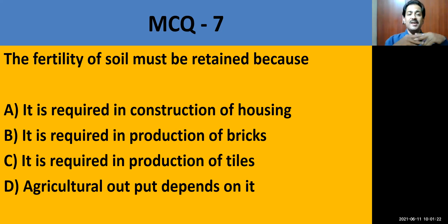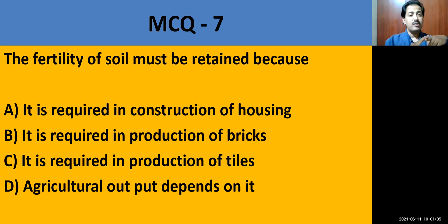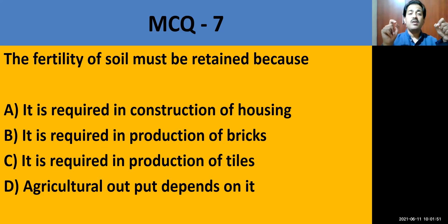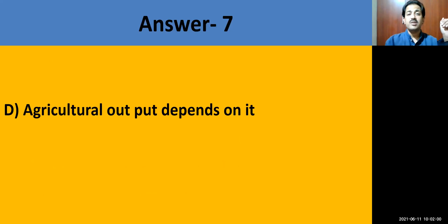MCQ question number 7: The fertility of soil must be retained because — it is required in construction of housing, production of bricks, production of tiles, or agricultural output depends on it. Entire India faces the problem of soil erosion and losing soil fertility due to floods and other natural agents. The correct answer is option D — agricultural output depends on it.